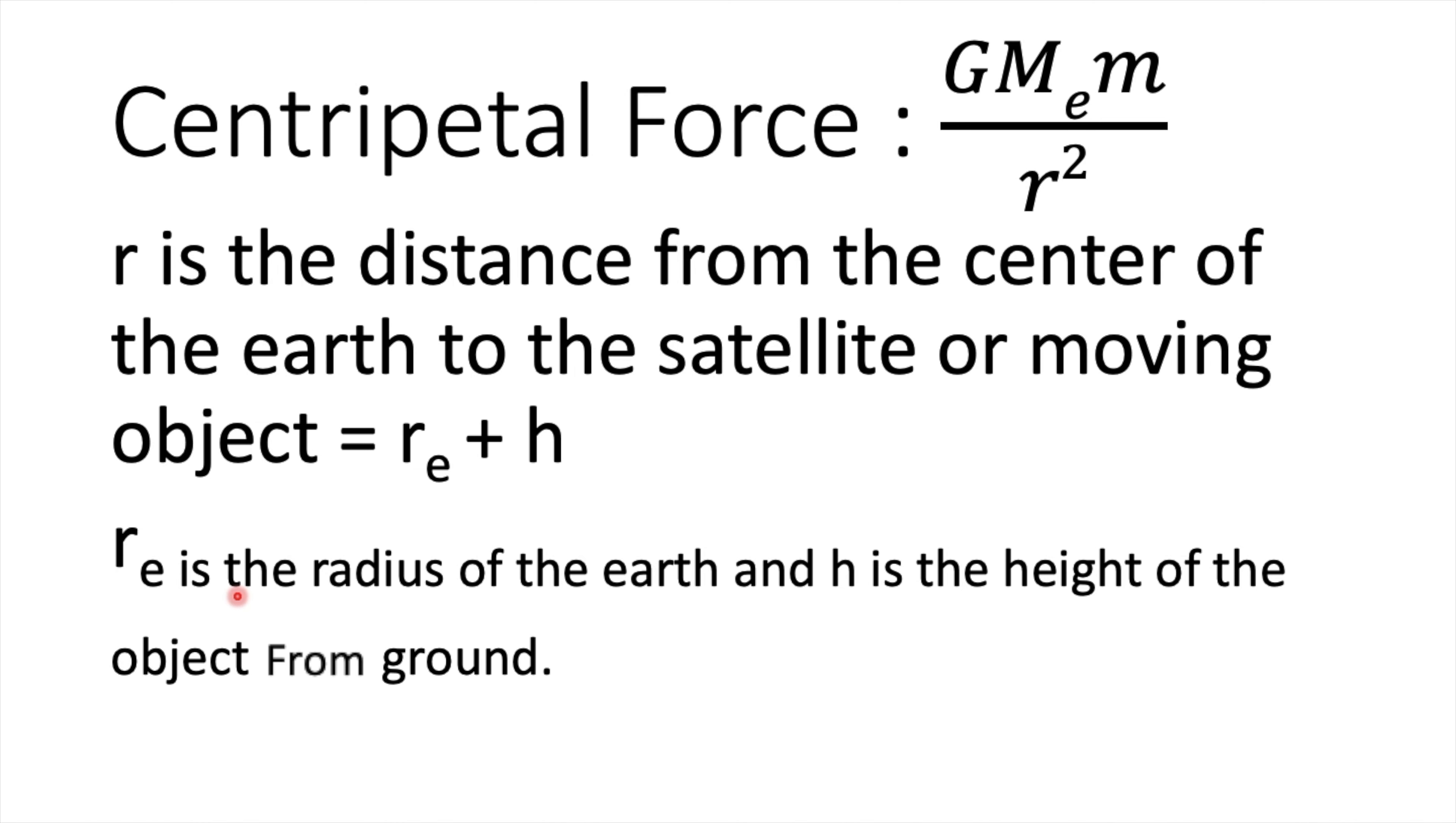And r is the distance from the center of the earth to the satellite or moving object which equals r_e plus h, where r_e is the radius of the earth and h is the height of the object from the ground.